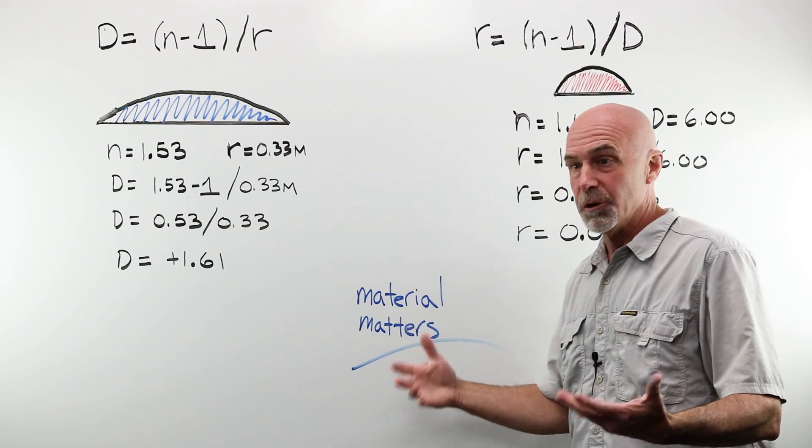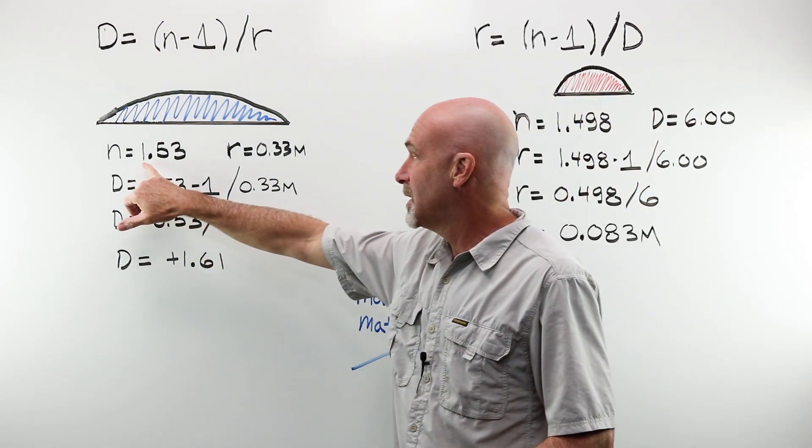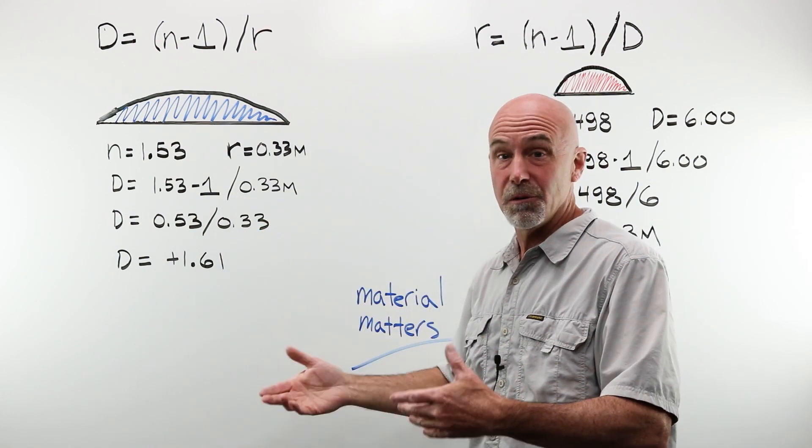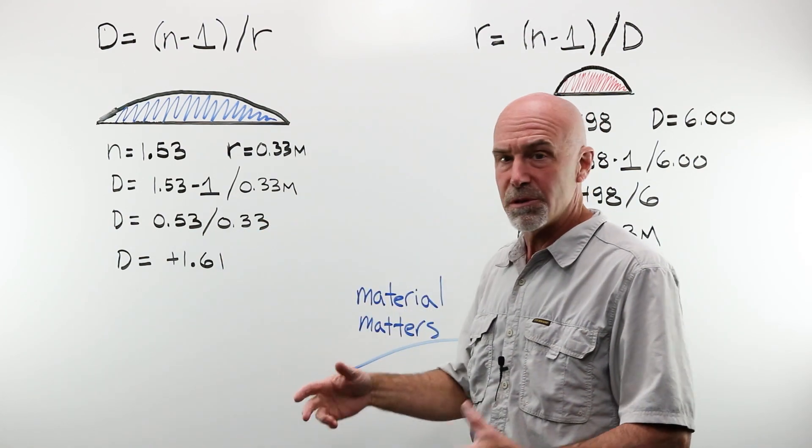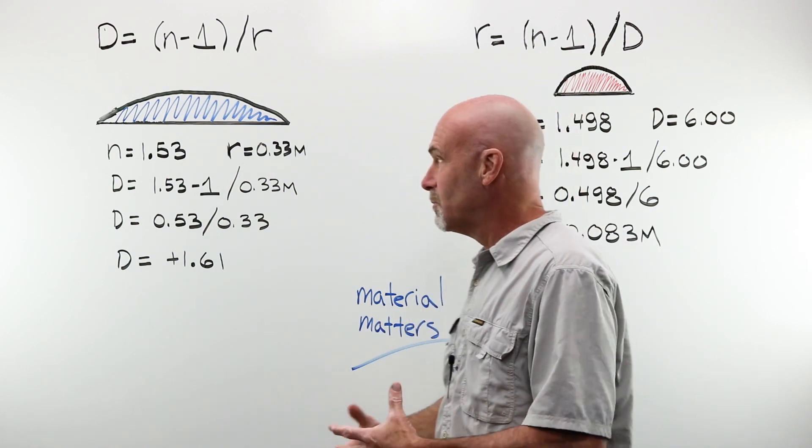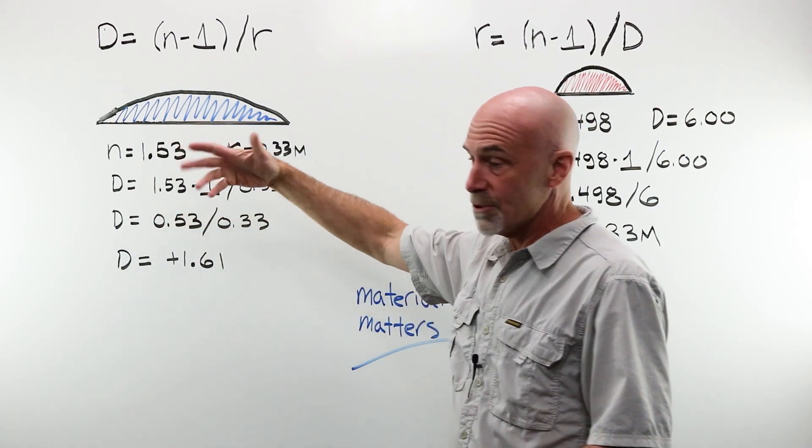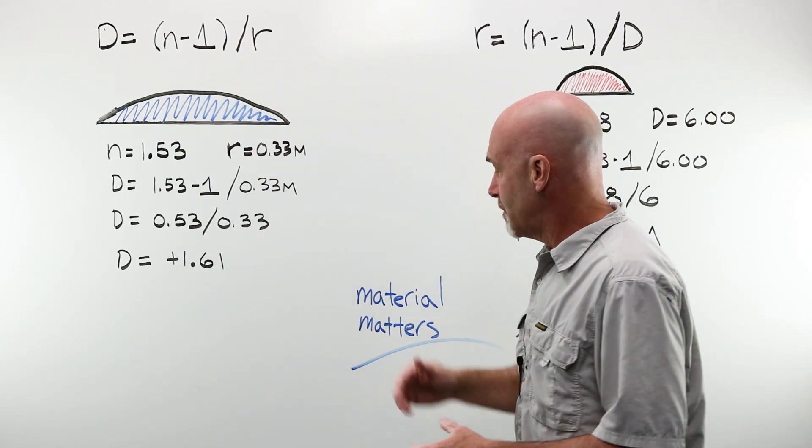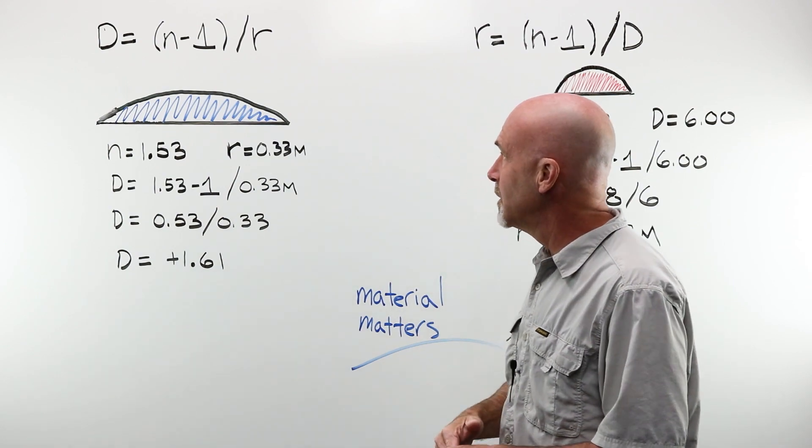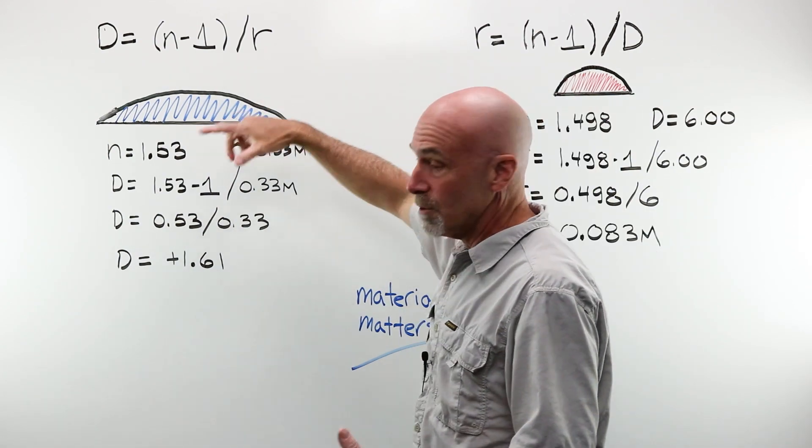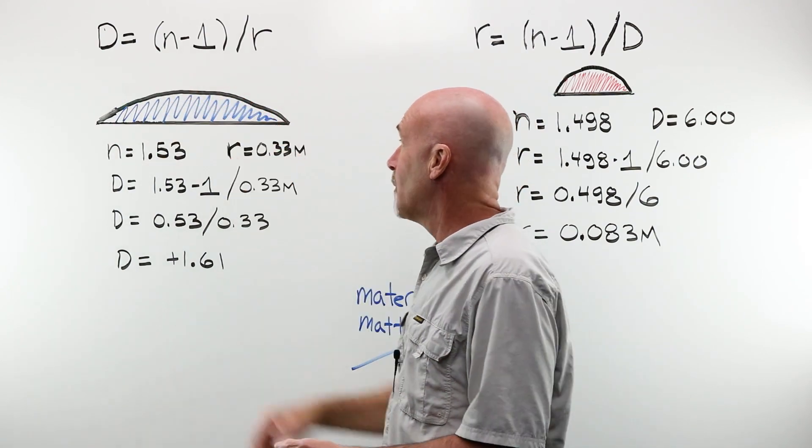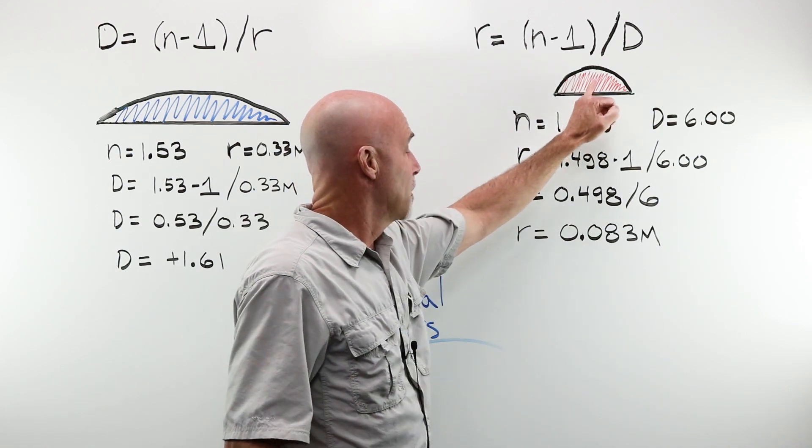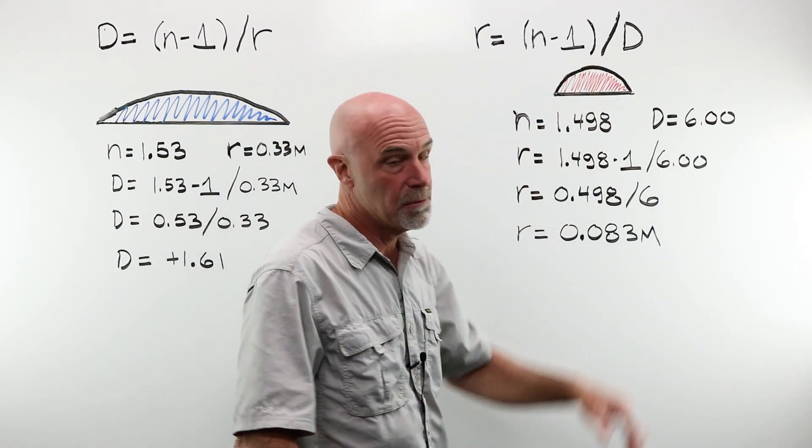Remember, of course, that material matters. So we're going to be given N, our index of refraction for the material. Depending on the material, light will slow down and change direction more, so it's going to influence overall power. 1.53, Trivex, crown glass. 1.498, CR-39. So material matters here. I can use the surface power formula to solve for either the power of the lens or the radius of curvature of the curve that I required in order to create the power necessary.